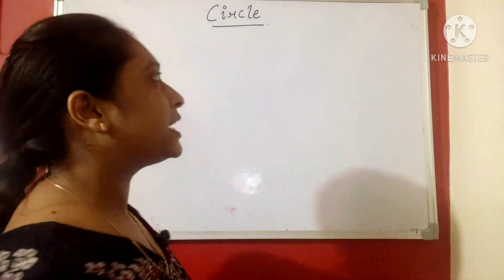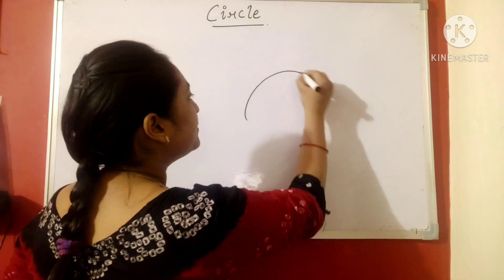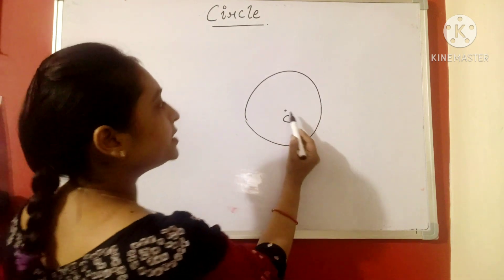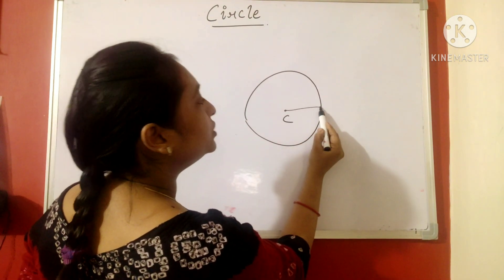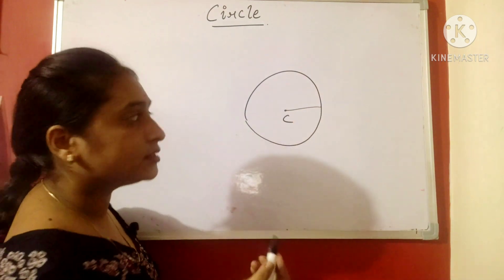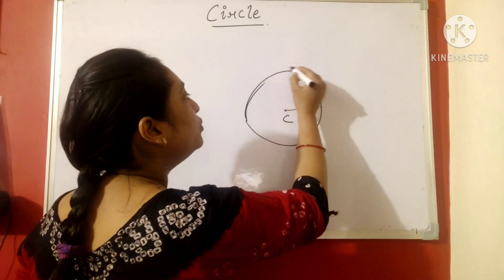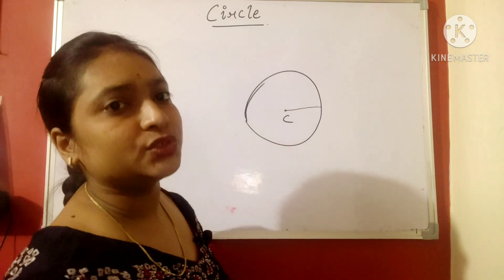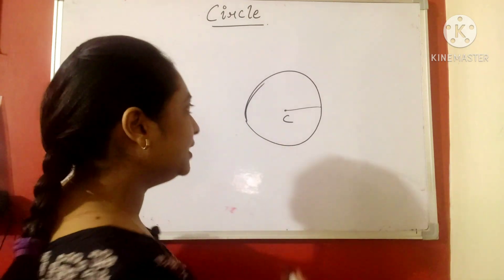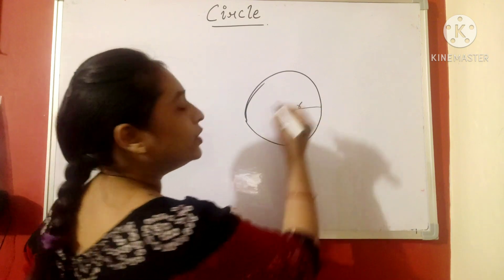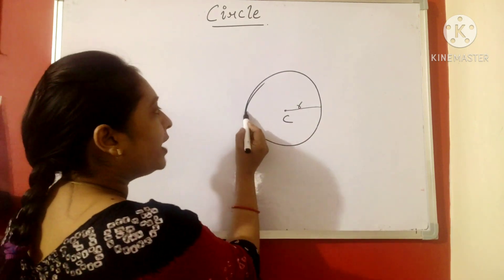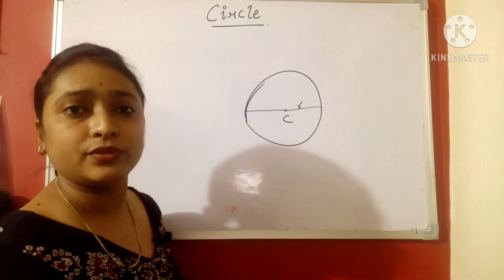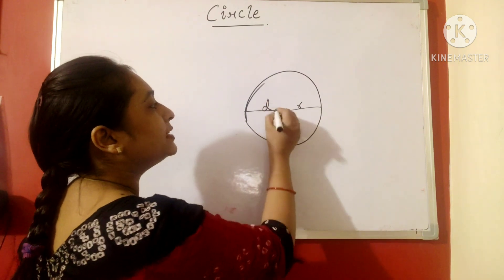Now we should understand the terminology of the circle. When we have a circle, we have the center point C. The distance between the center point to the circumference - now what is circumference? The boundary of the circle is called a circumference. If the word perimeter is actually the circumference in the circle, this distance is called radius. And when the line joins from one end to another end of the circle, it is called as diameter.